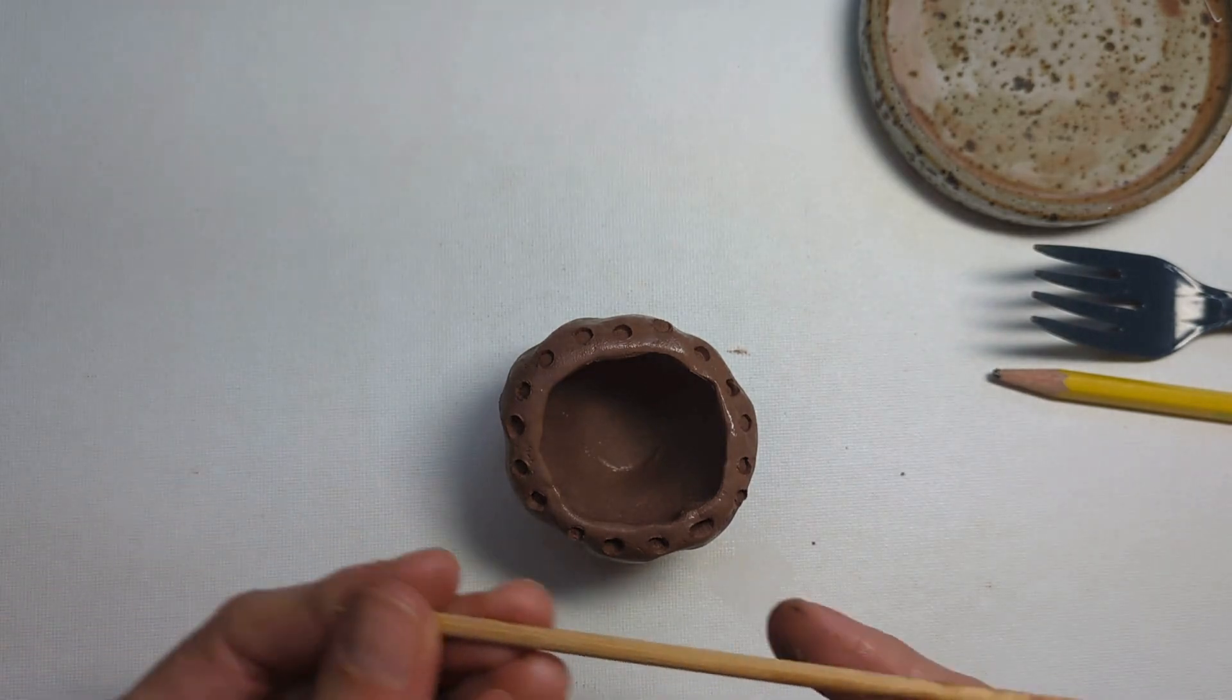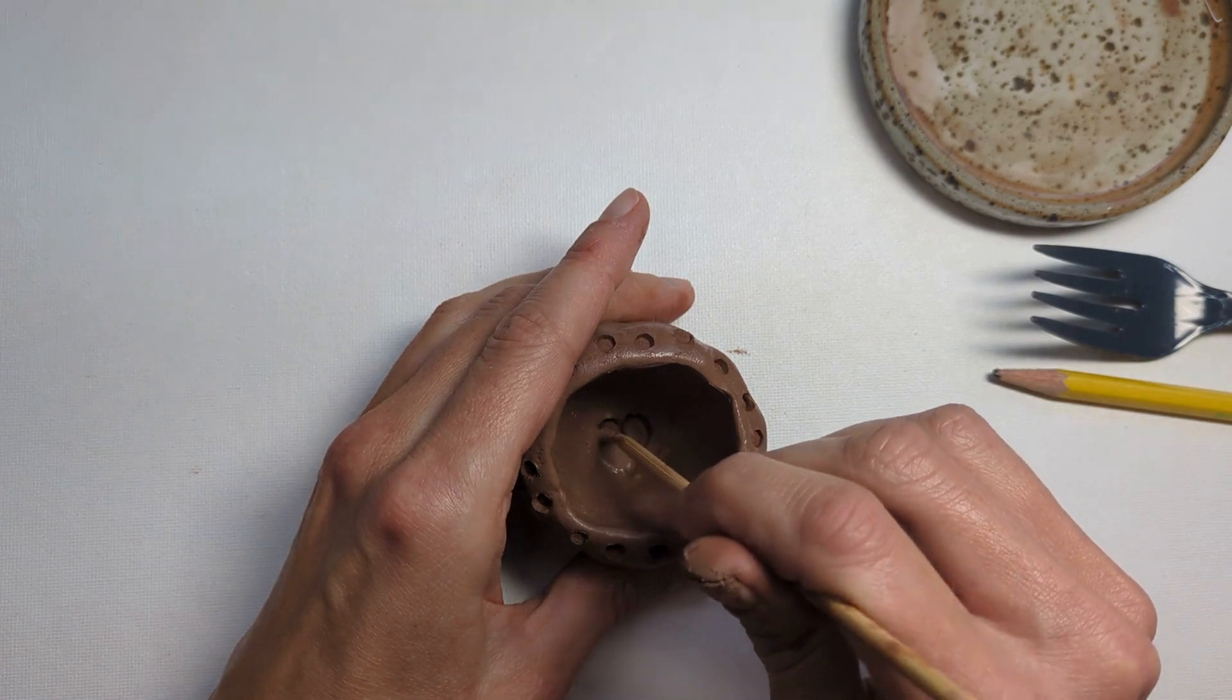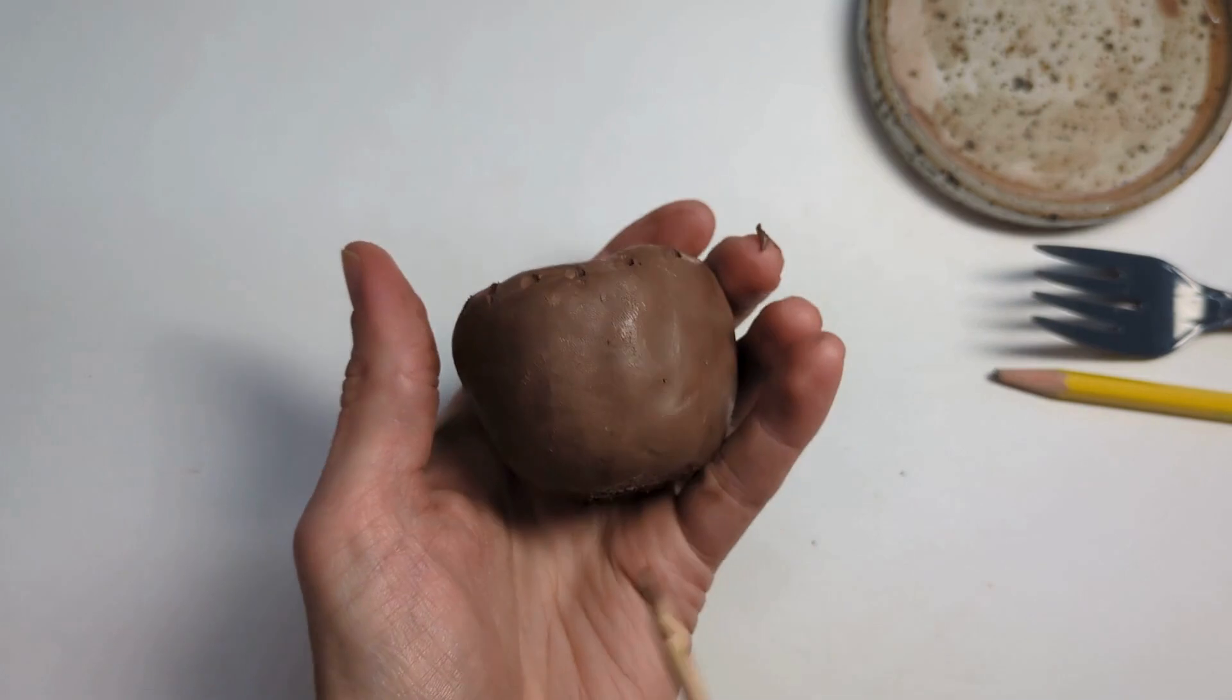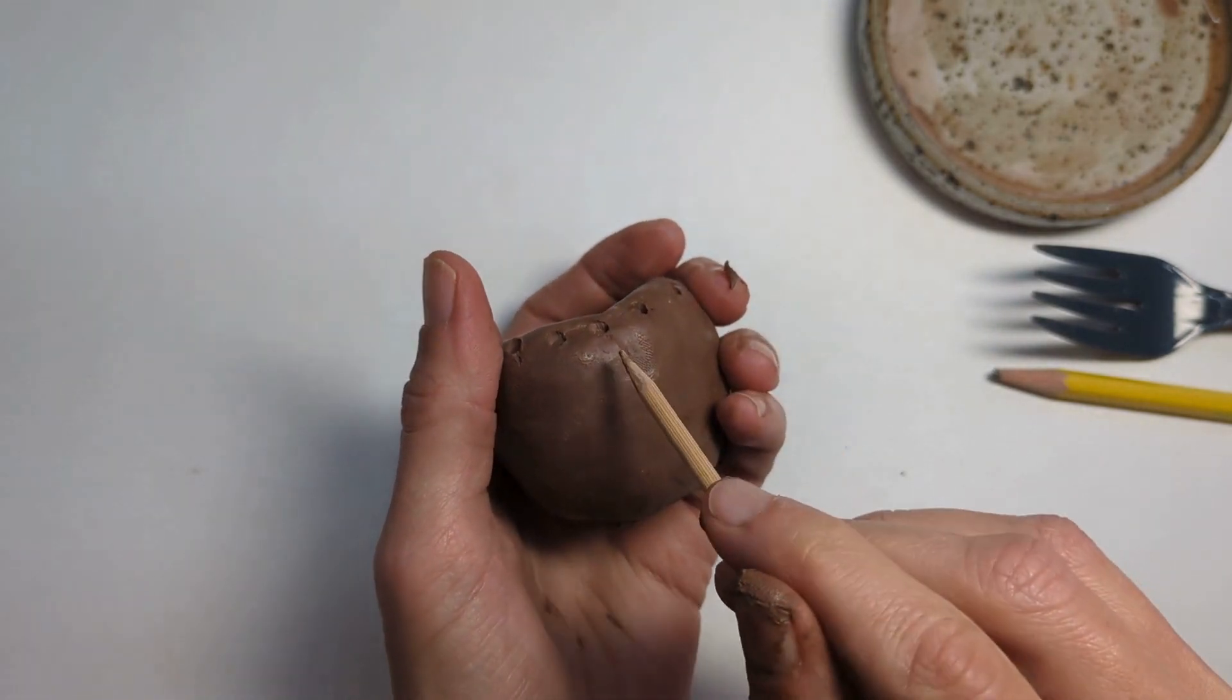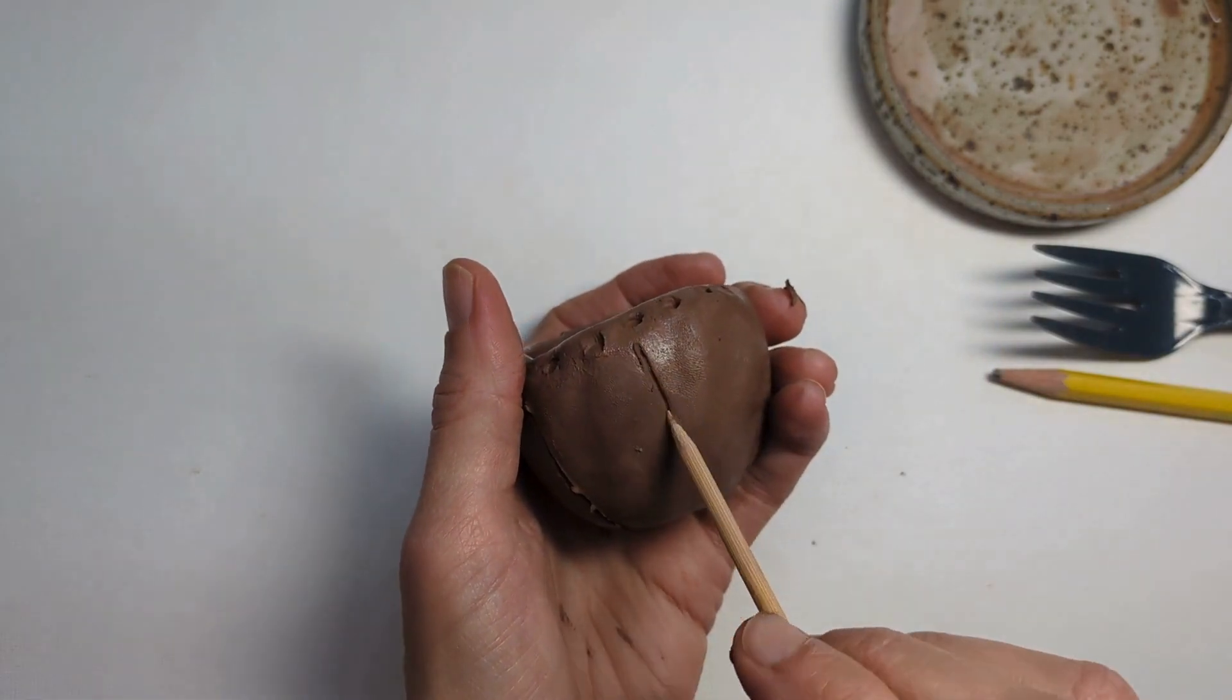I can also use the pointy end to draw things in the pot. Maybe I want to have a heart at the bottom, maybe I want to have some stripes along the side, or I could create a pattern.